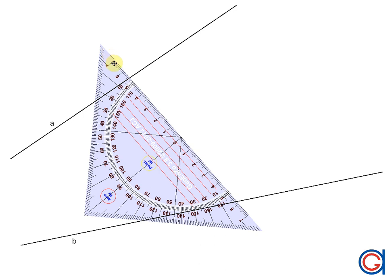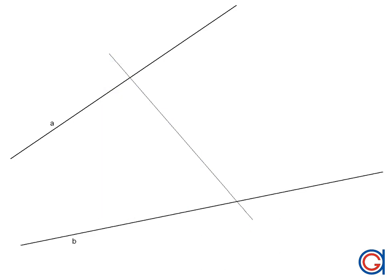The first thing we are going to do is to draw any random line which we will call R, that cuts the two sides of the angle, obtaining two new points A and B as can be seen here on the screen. This line R generates four interior angles which we will call A, B, C and D as shown here on the screen.